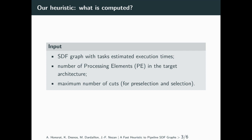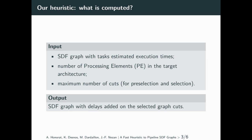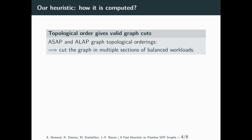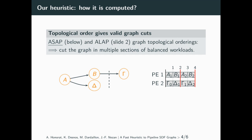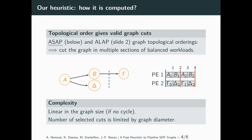As an output, our heuristic simply returns the input SDF graph with delays added on the selected graph cuts. To do so, the heuristic orders the tasks of the graph according to as-soon-as-possible and as-late-as-possible topological orderings. These two orderings give a small subset of all valid graph cuts, which are then used to split the graph in consecutive sections of equivalent workload. Compared to the previous example on slide 2, which uses as-late-as-possible ordering, the as-soon-as-possible cut saves one delay between alpha and delta, thus reducing the memory footprint. Our heuristic is highly scalable since it only requires a few graph traversals, and the number of selected cuts is limited by the graph diameter.